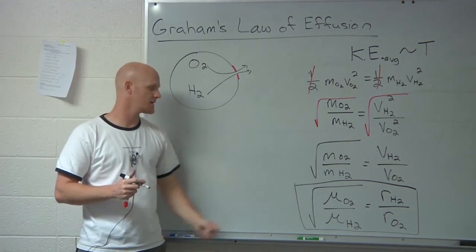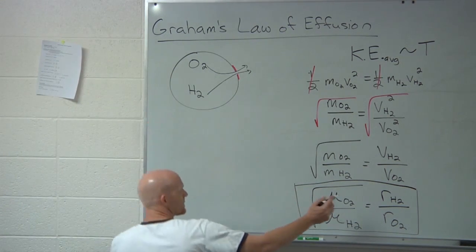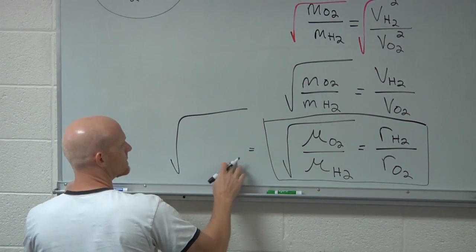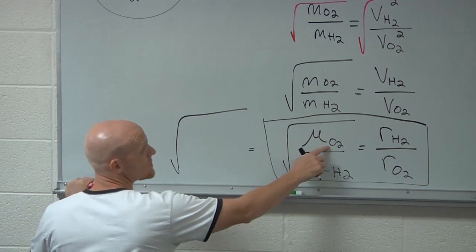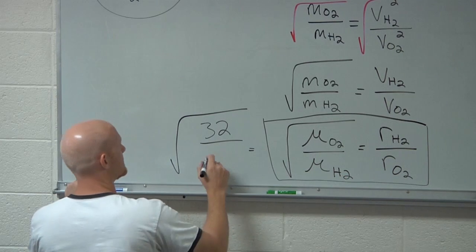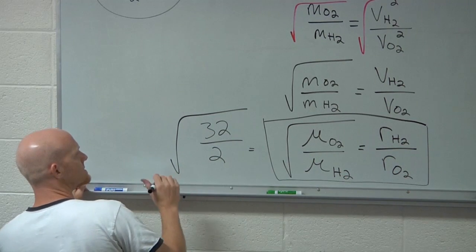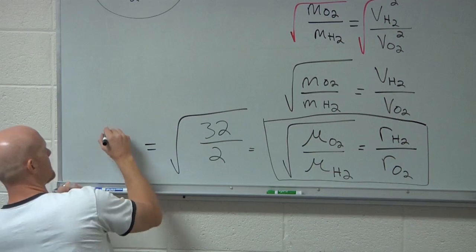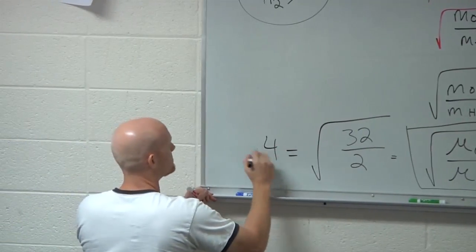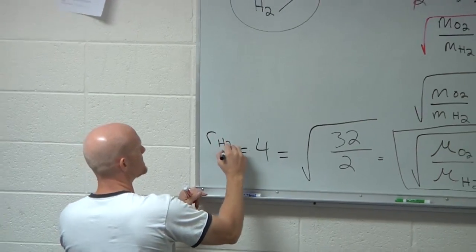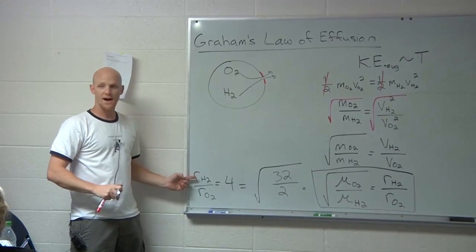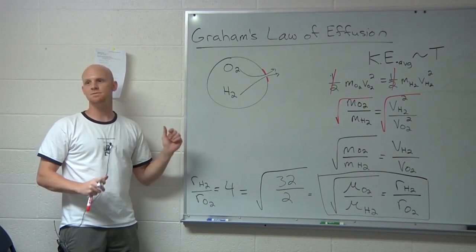So we're just going to plug and chug here. Rate of hydrogen over oxygen will equal the square root, what's the molar mass of O2? It's not 16, it's O2. 32. And the molar mass of H2? 2. What's 32 divided by 2? 16. What's the square root of 16? 4. And so what that means, 4 is equal to the rate of hydrogen relative to the rate of oxygen's effusion. So it tells us that hydrogen's escaping faster, and on average it's escaping 4 times faster.